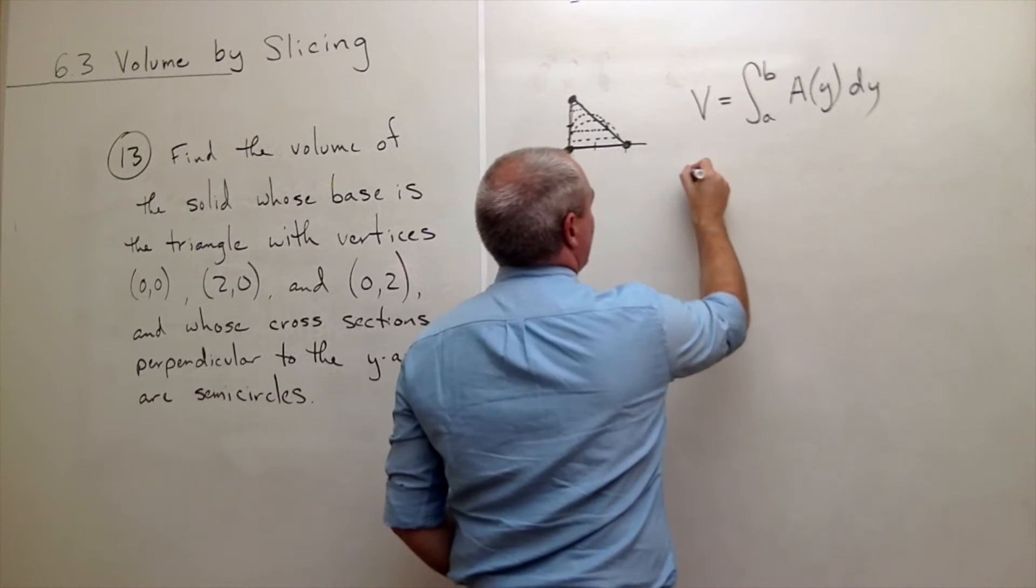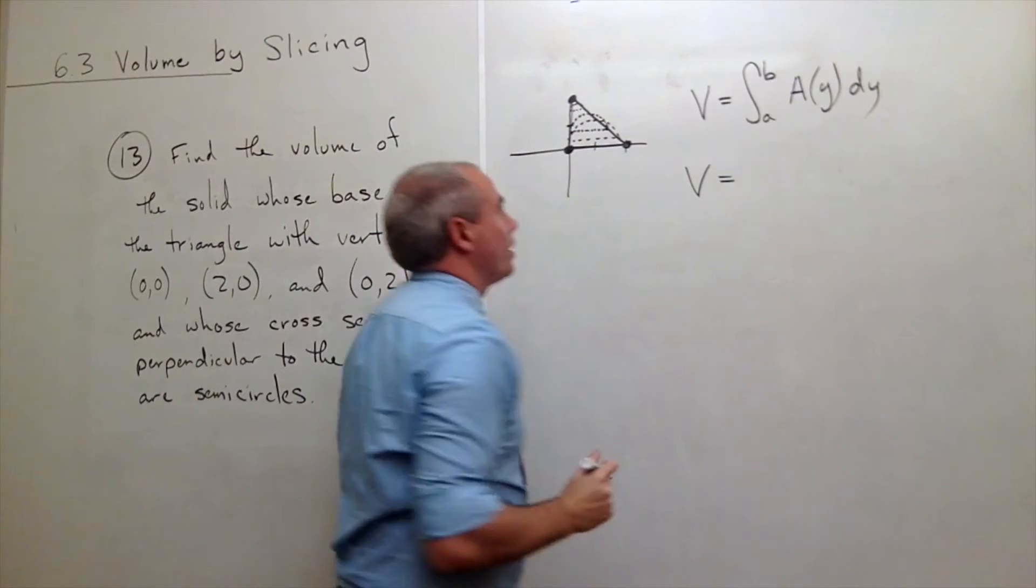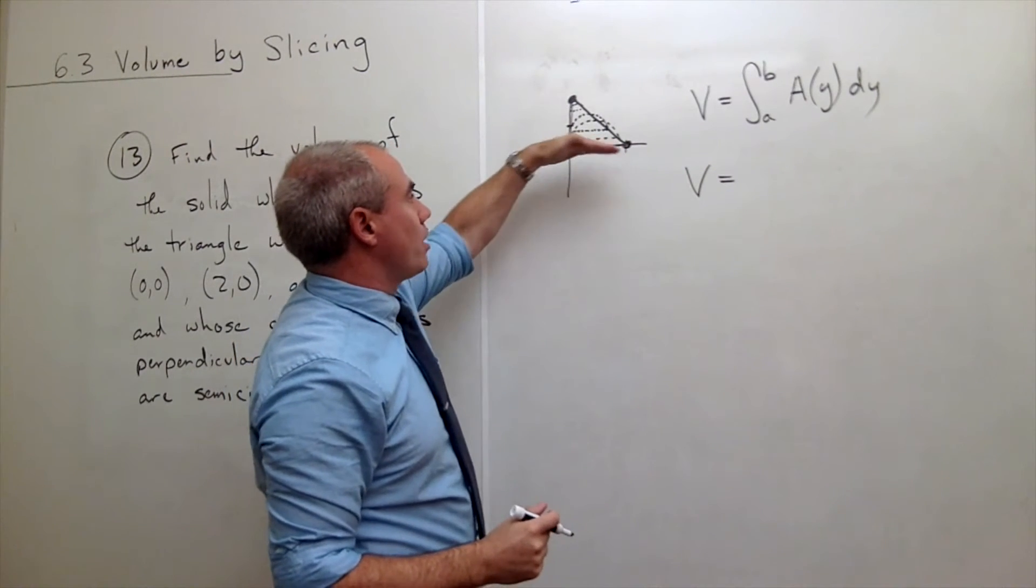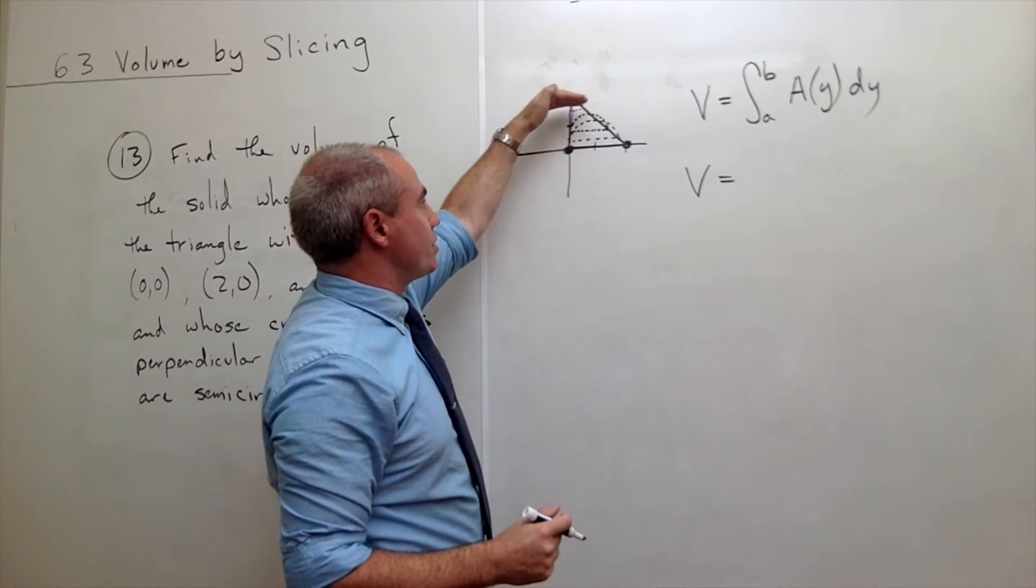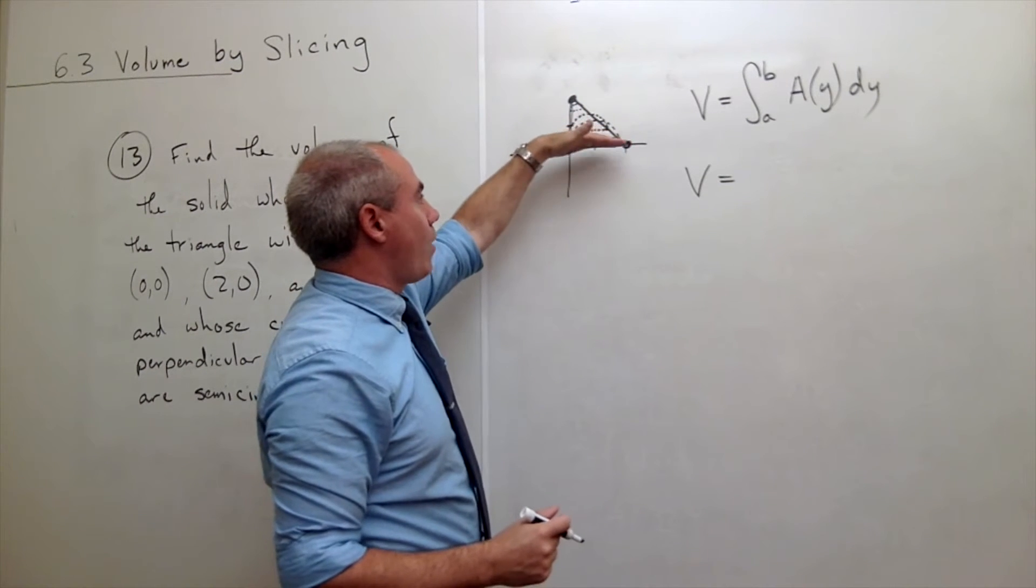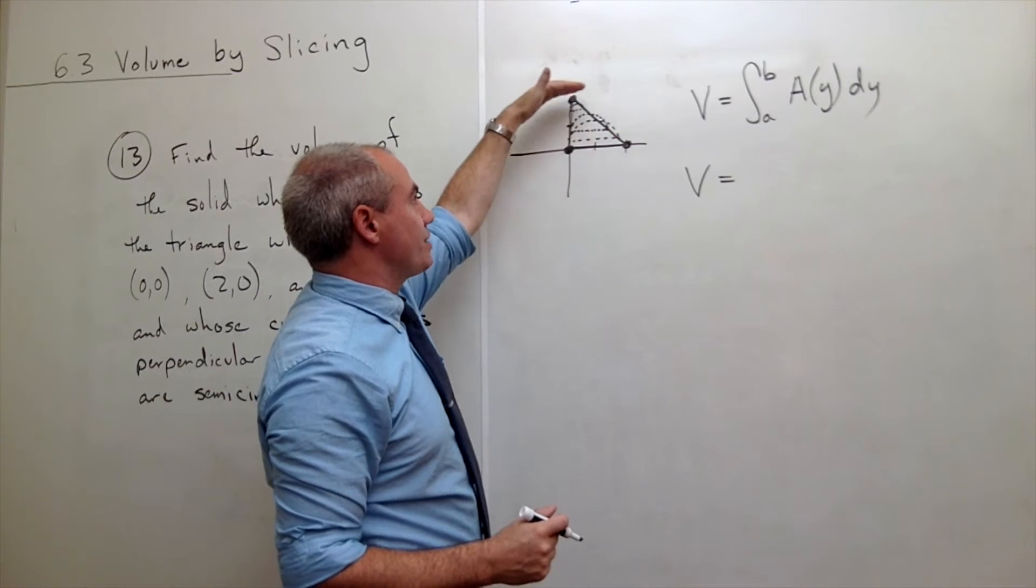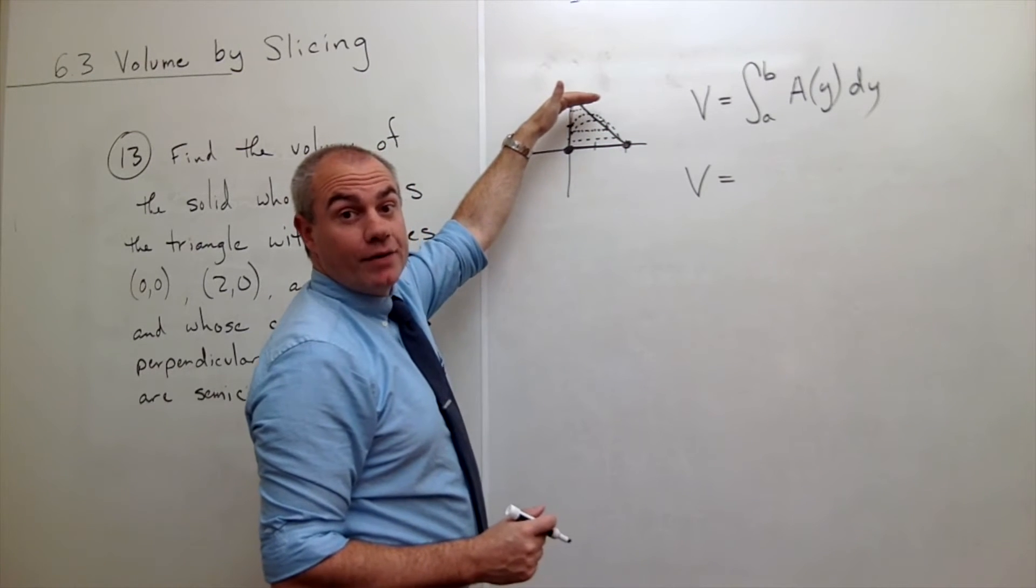So first of all, what is a and what is b? Where do we start our cutting and where do we stop our cutting? So we start cutting at y equals zero and we stop cutting at y equals two.